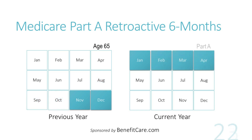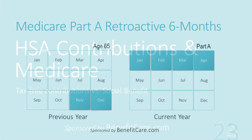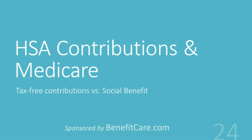Once a Medicare-eligible individual enrolls in premium-free Medicare Part A hospital insurance, they are now entitled to 6 months of retroactive benefits. For example, when the individual leaves or loses their large employer group health plan and enrolls in Medicare using a special enrollment period. Now let's look at how tax-free contributions into a health savings account or HSA are affected by enrolling into a social benefit like Medicare Part A.